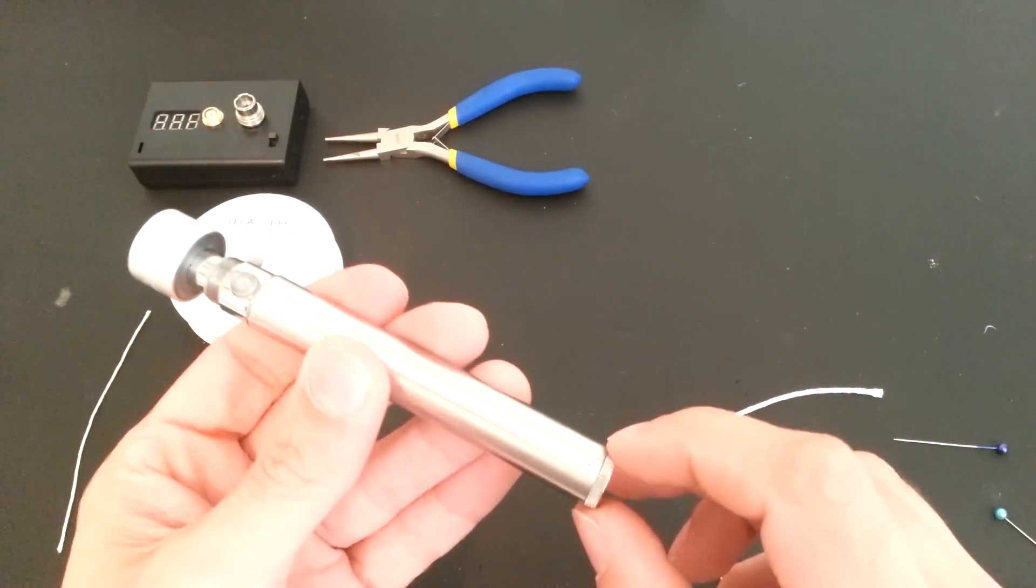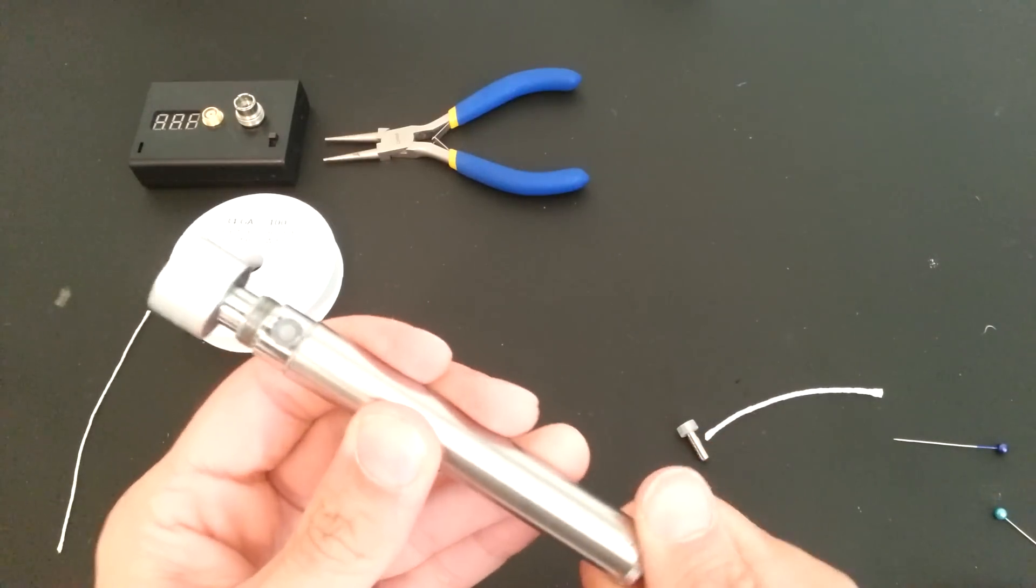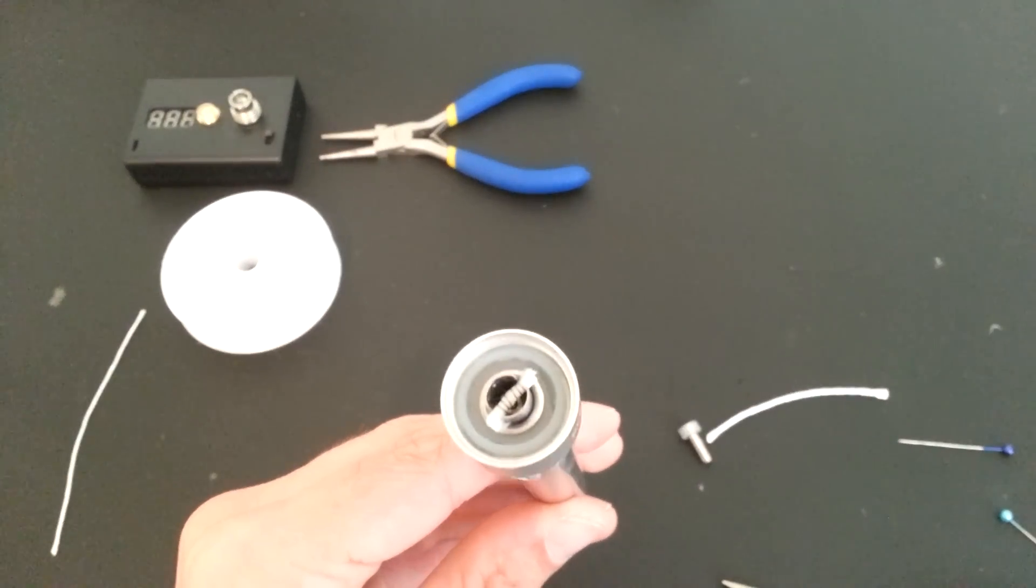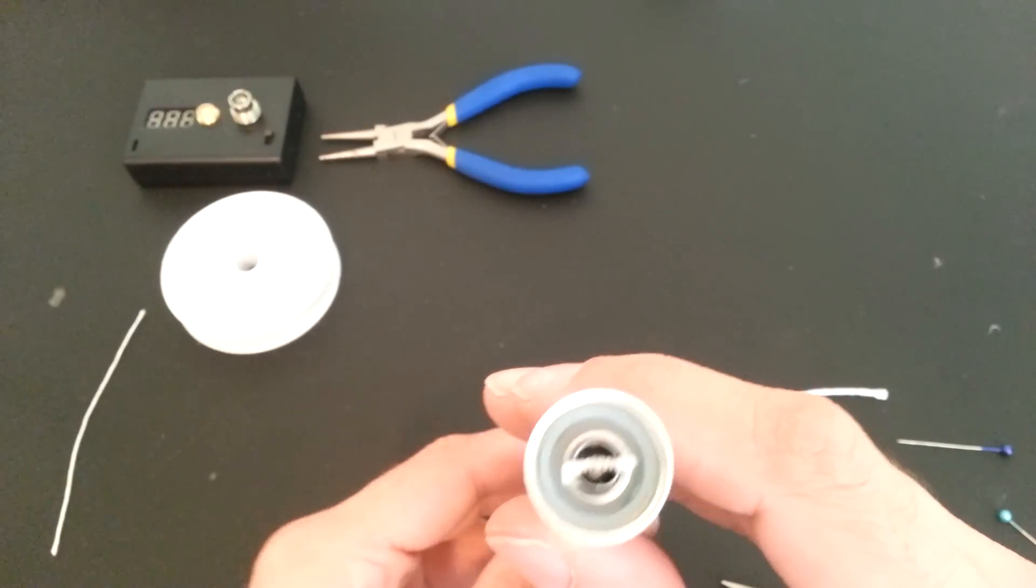Now, usually what I do is I crank the voltage all the way up and then bring it just a little bit back. Start to press the button when you see the coil begin to glow orange, release the button.